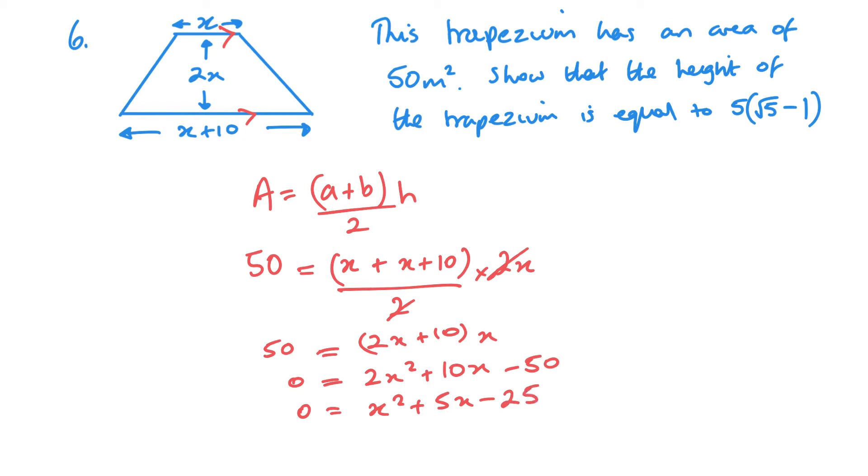Now, at this point, I can see that it's not going to factorize into brackets, and we are doing the formula, so it should be like that. So, now we just want to substitute these values into the formula. So, I'm looking at a equals 1, b equals 5, and c equals negative 25. So, we've got minus b plus or minus b squared minus 4 times a times c, and this is all over 2a.